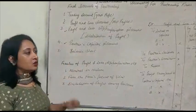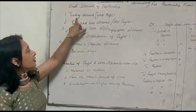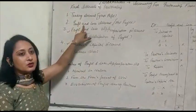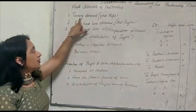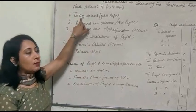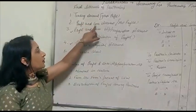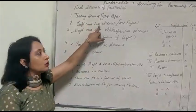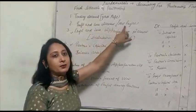In class 11 you have already prepared trading account and profit and loss account in sole proprietorship. Through the trading account we come to know how to calculate gross profit, and through the profit and loss account we come to know how to calculate net profit.